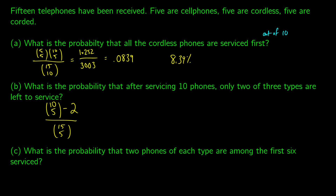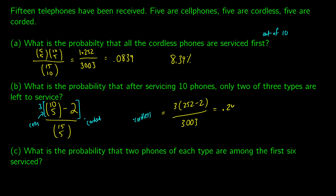There are three possible scenarios: the five remaining could all be cell phones, all corded, or all cordless. To account for all three, we multiply by three. So the numerator is 3 × (10 choose 5 − 2) and the denominator is 15 choose 5, which equals 3003 — same as 15 choose 10. With 10 choose five being 252, we get 3 × (252 − 2) / 3003, giving us 0.2498, or 24.98%.